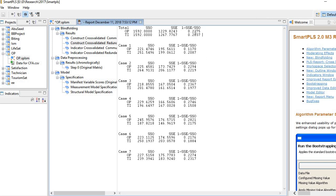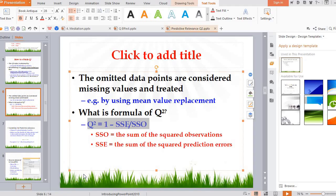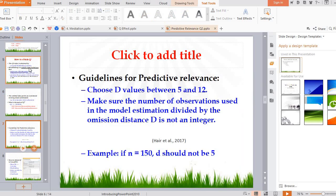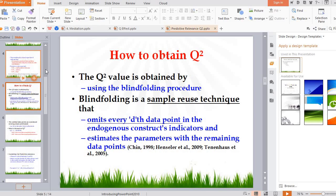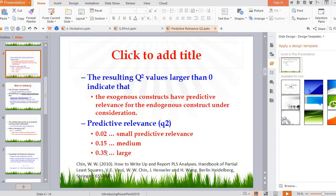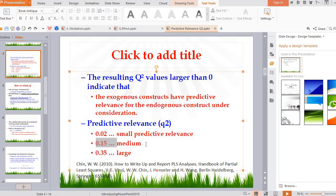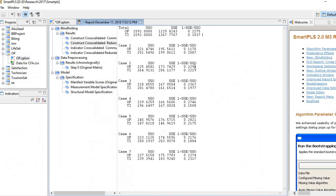So in case of OP, Q-square is 0.2275. Let's see where does it fall. So you see here, it falls in the range of medium. So in first case it is medium size predictive relevance. Predictive relevance is very much there. In second case also, predictive relevance is there.